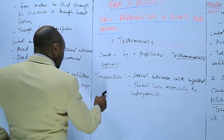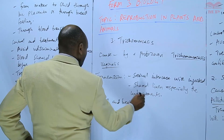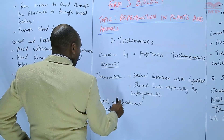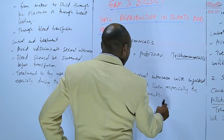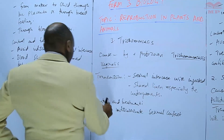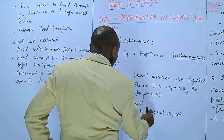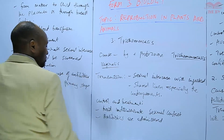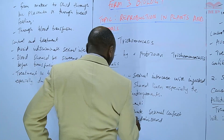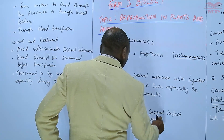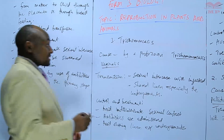In terms of control and treatment: avoid indiscriminate sexual contacts. Antibiotics are administered to treat the disease. Also avoid sharing linen or clothes, especially undergarments, because trichomoniasis is basically caused by a parasite.